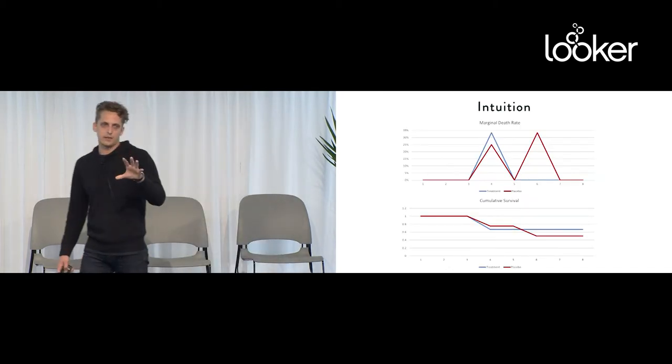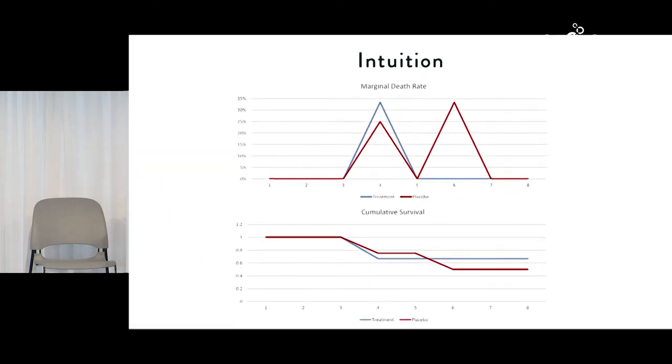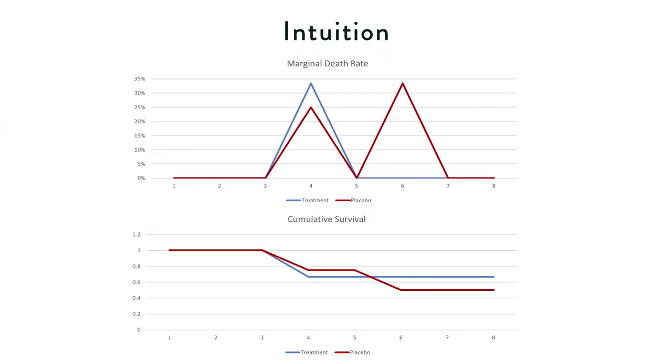We can plot this and it's exactly like what we expected. We have two spikes in the placebo arm, one spike in the treatment arm. The top panel is our marginal death rate in each of these different periods, relatively straightforward to calculate.